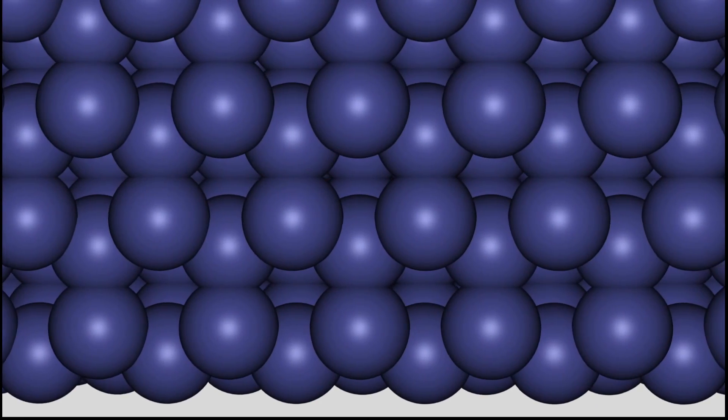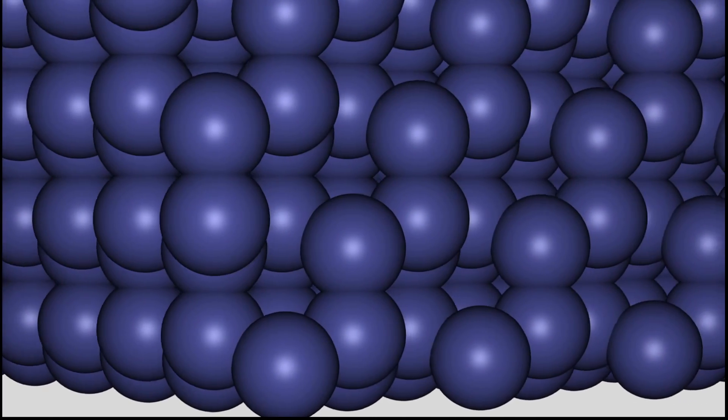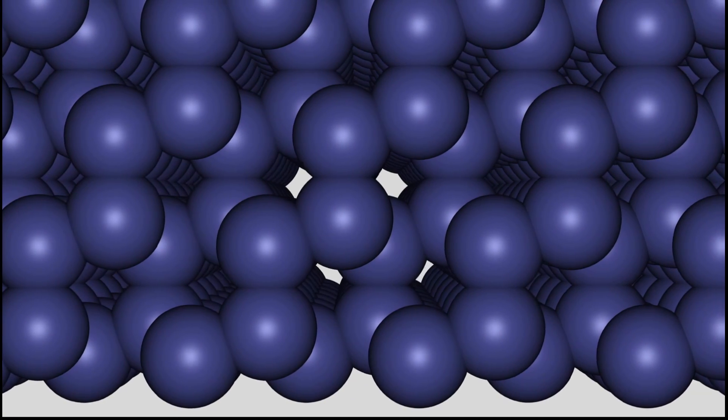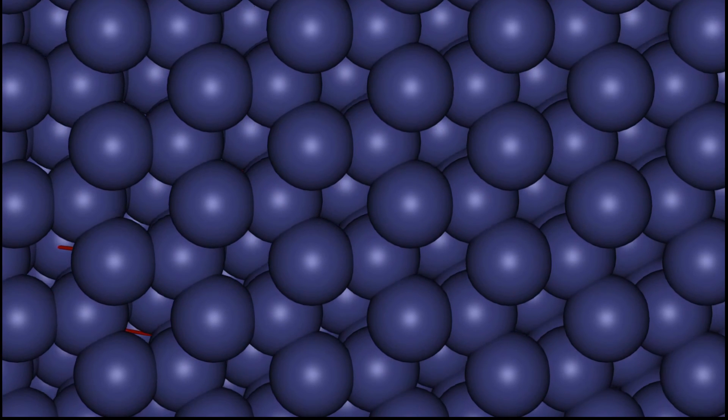Let's remove the sticks and enlarge the atoms according to the Calotte model. By now only some viewing angles allow an insight to the crystal lattice.